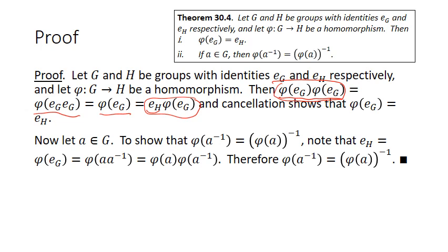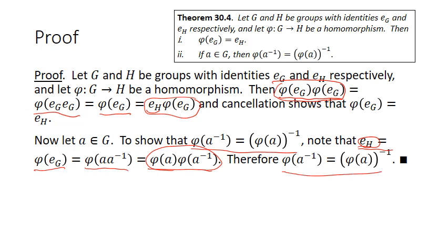For the second part, let A be an element of G. We note that E_H equals phi of E_G, and we can rewrite phi of E_G as phi of A times A inverse. Splitting that into two separate parts, we get E_H equals phi of A times phi of A inverse. That means phi of A and phi of A inverse must be each other's inverses, so phi of A inverse equals phi of A inverse.